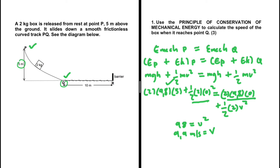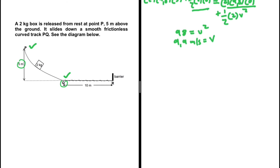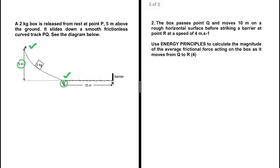So the speed of the box when it reaches point Q is 9.9 m/s. That's how we apply the principle of conservation of mechanical energy — nothing really complicated. Now let's look at the next question.